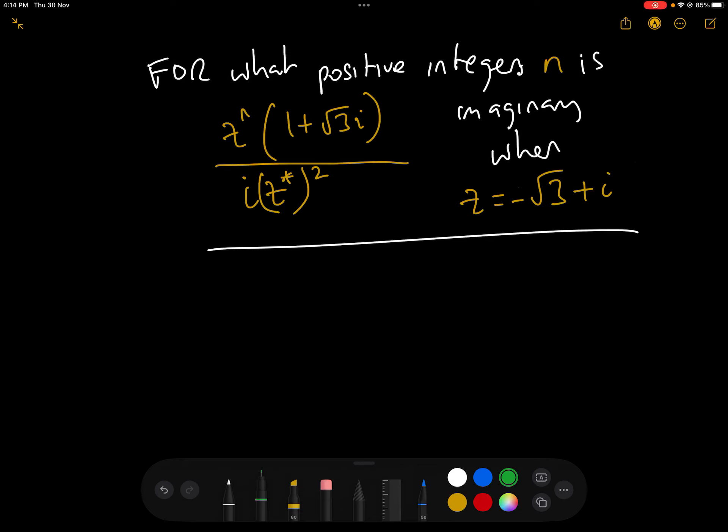This is quite a common pre-university or higher A-level complex number question. What they're asking is, for what positive integers n is this expression here, z to the n times 1 plus root 3i over i times z conjugate squared, imaginary, when we are given that z equals minus root 3 plus i.